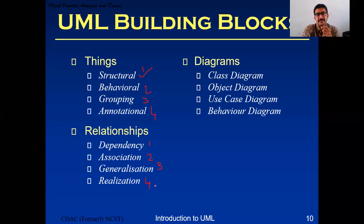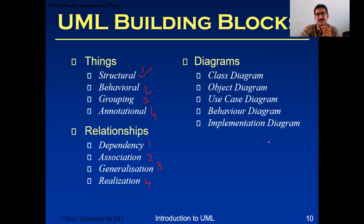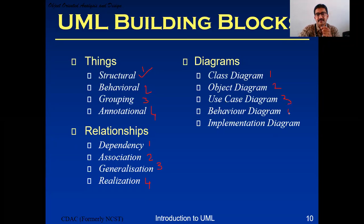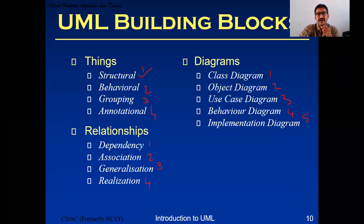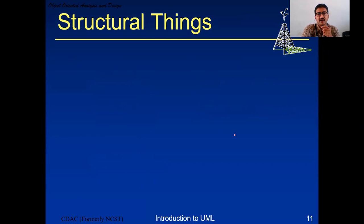Coming to the third building block of UML - diagrams. We have diagrams like class diagram, object diagram, use case diagram, behavioral diagram, and implementation diagram. So we have four types of things, four relationships, and five diagrams: class diagram, object diagram, use case, behavioral, and implementation.